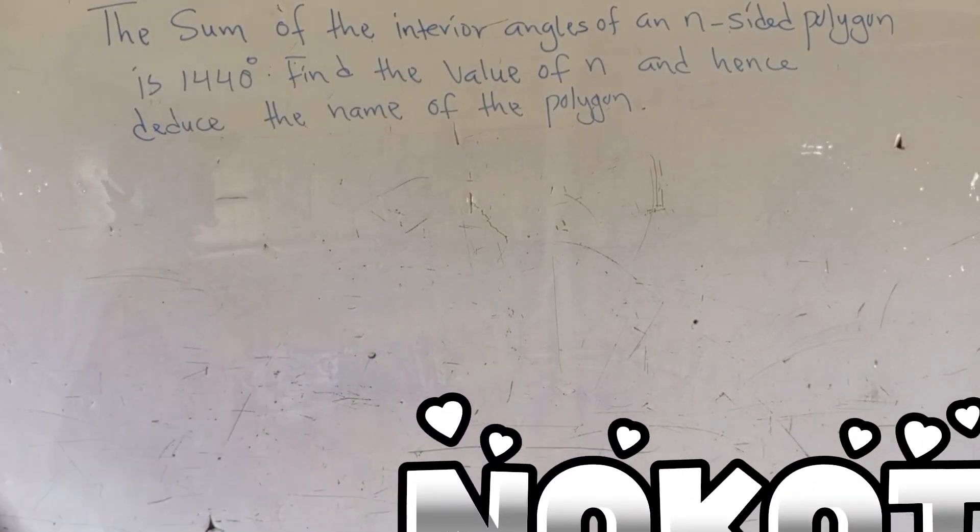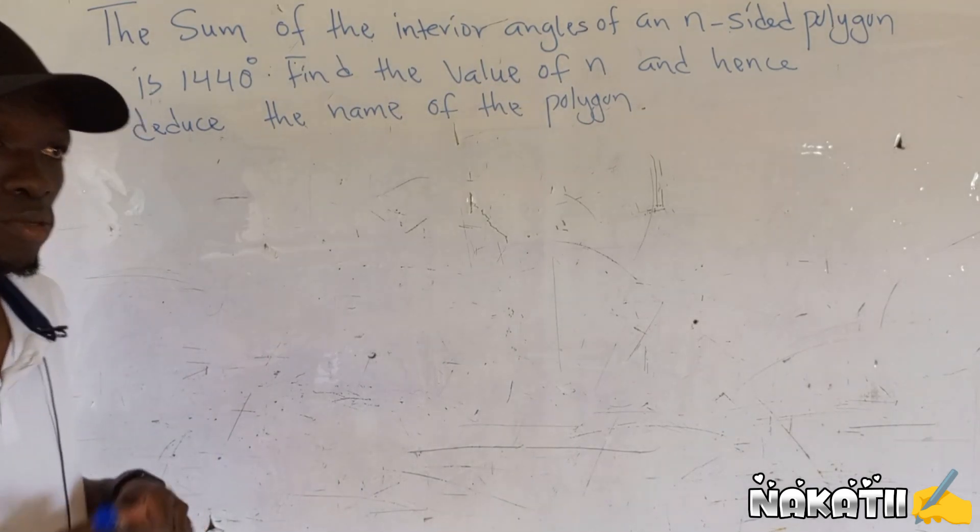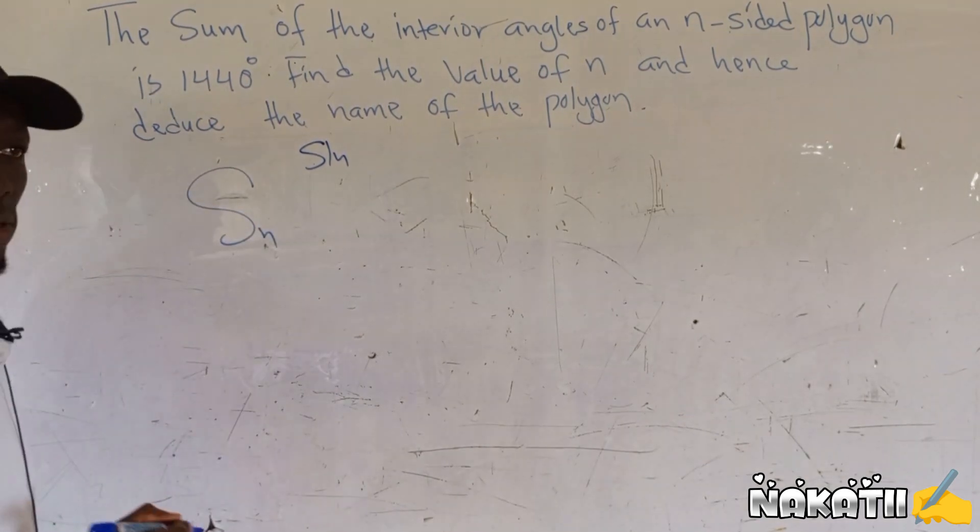The sum of the interior angles of an n-sided polygon is 1440 degrees. Find the value of n and hence deduce the name of the polygon. Now we always say that sum of n-sided polygon is always given by 2n minus 4 multiplied by 90.